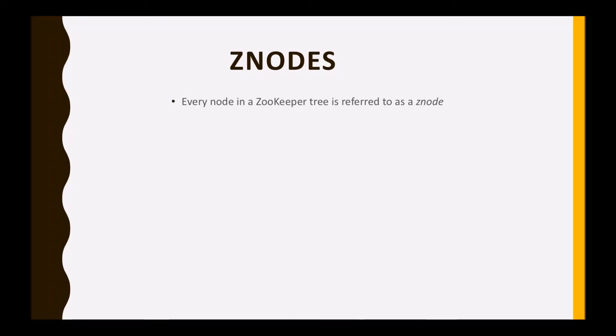Z nodes — every node in a ZooKeeper tree is referred to as a Z node. Z nodes maintain a stat structure that includes version numbers, ACL, timestamp, and data length.